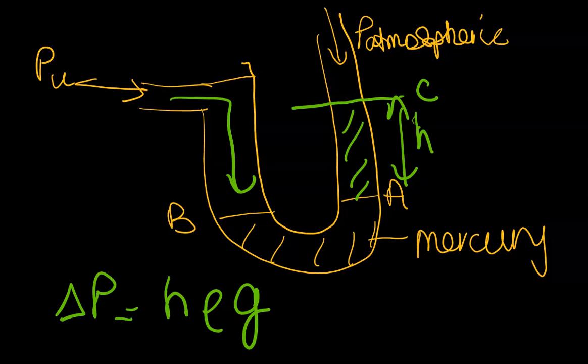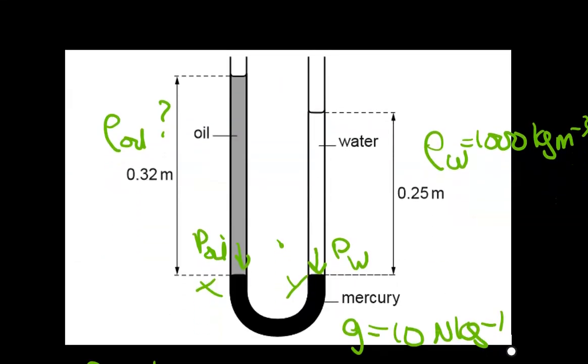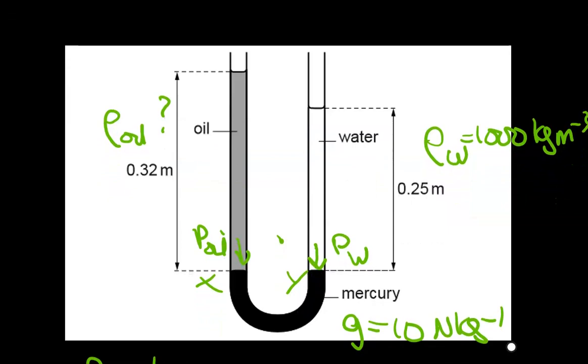What they can do in an exam is they can give you a calibrated manometer and you will be asked to read off the values of the different levels. When you do that, you will be able to determine the height and then find the pressure associated.